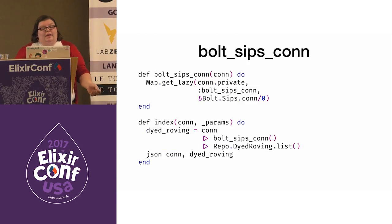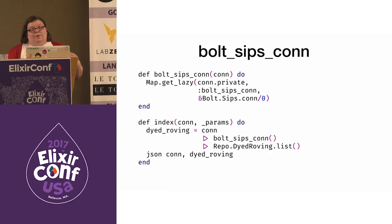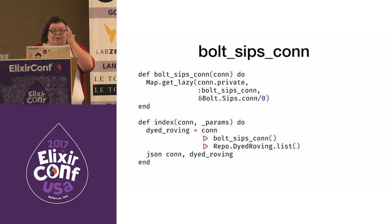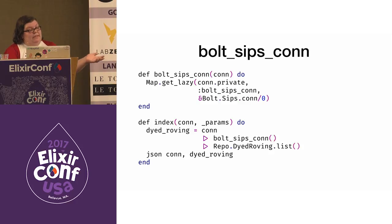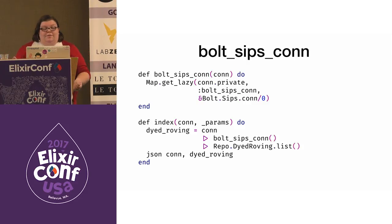Bolt Sips con is a function in the controller file. It takes in the plug connection and we look for the private connection in the map. Get lazy is used to ensure that we only make one connection instead of making multiple connections that could lead to confusion and eat up memory. The index function takes in the plug connection, pipes it to Bolt Sips con to get the test connection, and then pipes the connection to the repo list.